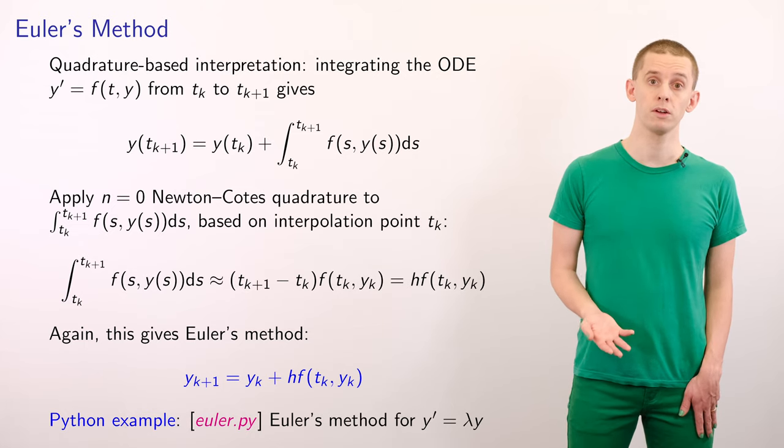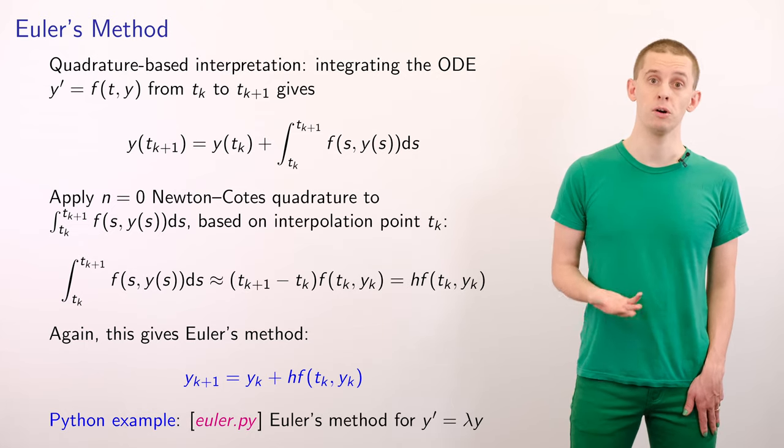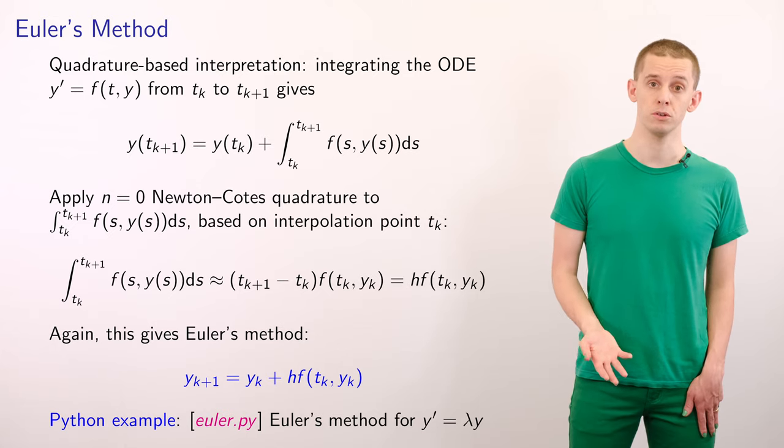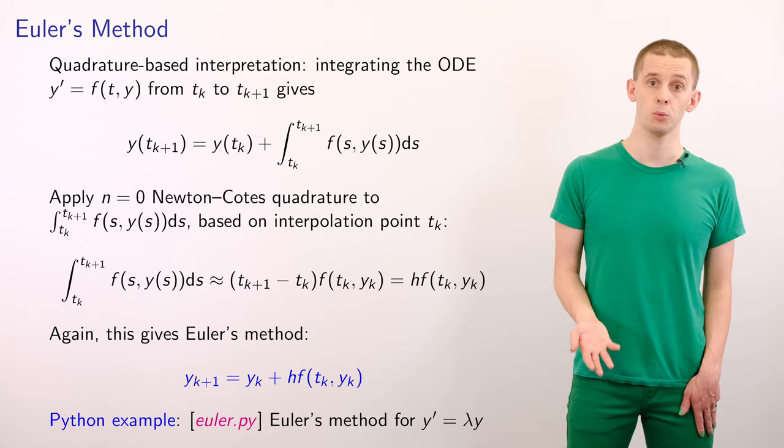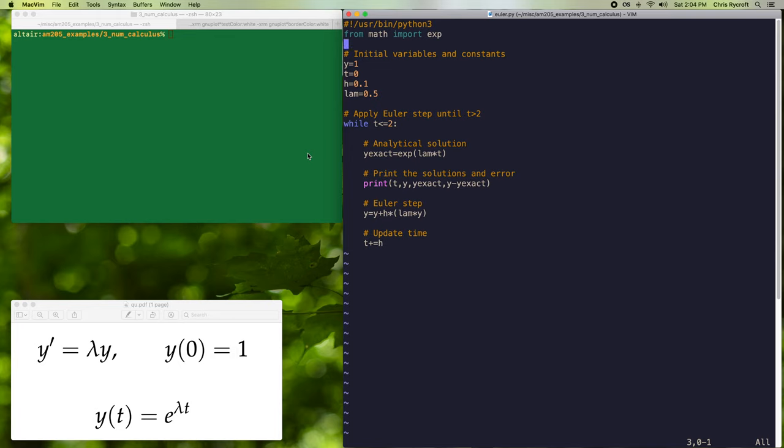We'll now take a look at a Python example that implements Euler's method for a simple equation y prime is equal to lambda y. Let's look at the program euler.py that we can use to demonstrate the forward Euler method. We'll apply this method to the test ODE of the form y prime is equal to lambda y using the initial condition that y of 0 is equal to 1. This ODE has the exact analytical solution of e to the lambda t that we can compare our numerical solution against.